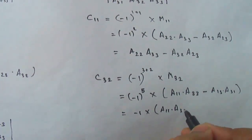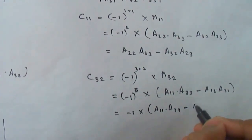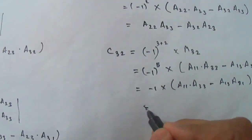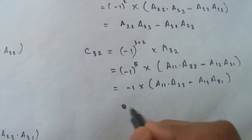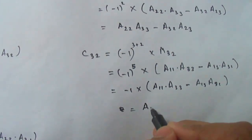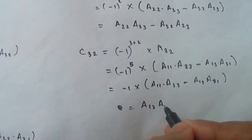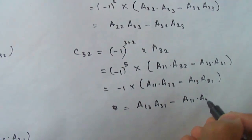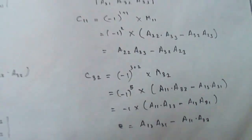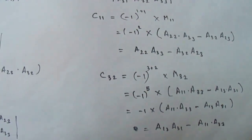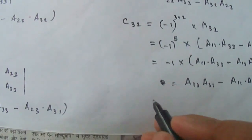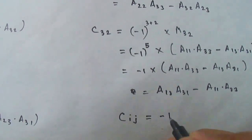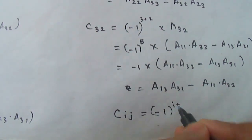So c32 = −1 × (a11 × a33 − a13 × a31), which gives c32 = a13 × a31 − a11 × a33. This is the cofactor of a32. The basic formula is: cij = (−1)^(i+j) × mij.